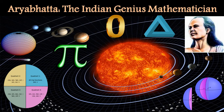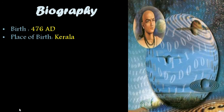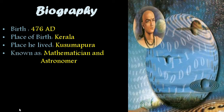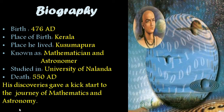Before that, I will talk about his biography in brief. Aryabhata was born in 476 AD. Because of his discoveries in mathematics, 476 AD is considered a golden age in mathematics. He was born in Kerala and lived in Kusumapura, which is assumed to be modern Patna in Bihar. Aryabhata is known as one of the prominent mathematicians and astronomers of the classical age. He studied at the University of Nalanda and died in 550 AD. His discoveries gave a kickstart to the journey of mathematics and astronomy.